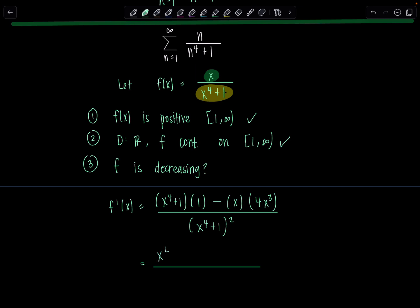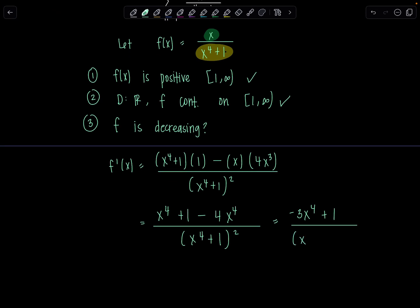Simplifying, we've got x to the fourth plus 1 minus 4x to the fourth, all over x to the fourth plus 1 squared. Combining like terms in the numerator gives us negative 3x to the fourth plus 1, over x to the fourth plus 1 squared.